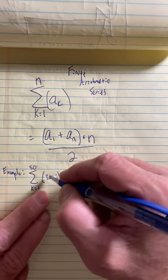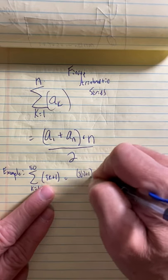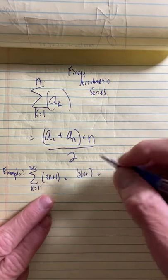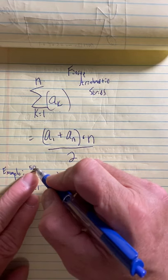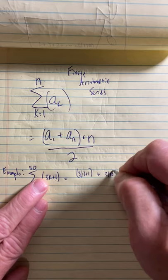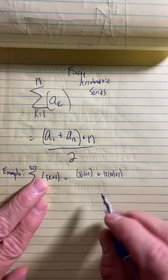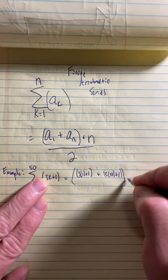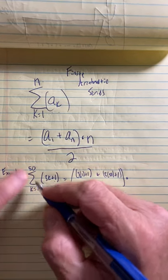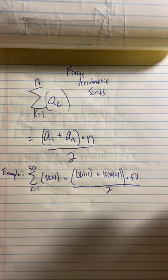The Gauss trick says find the first term. Well the first term is whatever you get when you put in 1. So 3 times 1 plus 1. Then add it to the nth term the last term. You put 50 in to find the last term. So 3 times 50 plus 1. So we take the first term and add it to the last term. And then what do you do? Well we multiply by the number of terms. If we start at 1 and go to 50 there's 50 of them and then you cut the whole thing in half because it's twice too big.